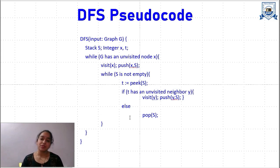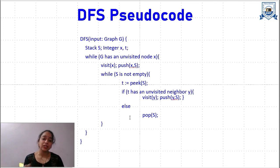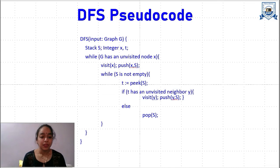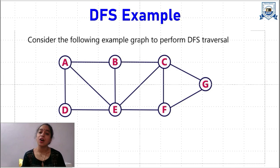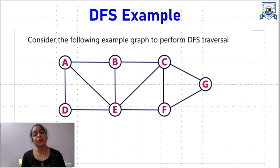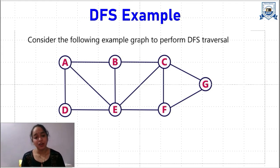Key points: Depth First Search traversal uses a stack as a data structure to implement. It can have more than one output depending on which unvisited adjacent vertex is chosen at each step, since a vertex can have multiple unvisited adjacent vertices. For example, another possible sequence for the example graph is A, D, E, B, C, F, G, or A, B, C, G, F, E, D. More than one DFS traversal sequence is possible for a single graph depending on which unvisited adjacent vertex is selected. This is Depth First Search traversal. Thank you.